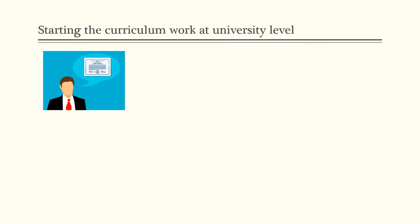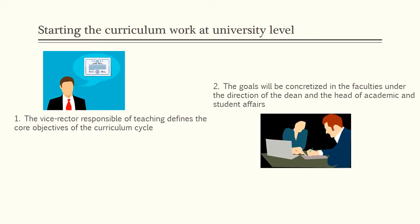Curriculum work progresses in stages. From a process point of view, the cycle starts when the vice-rector of the university defines the core objectives of the curriculum cycle, which are then concretized in the faculties by the dean and the head of academic and student affairs.